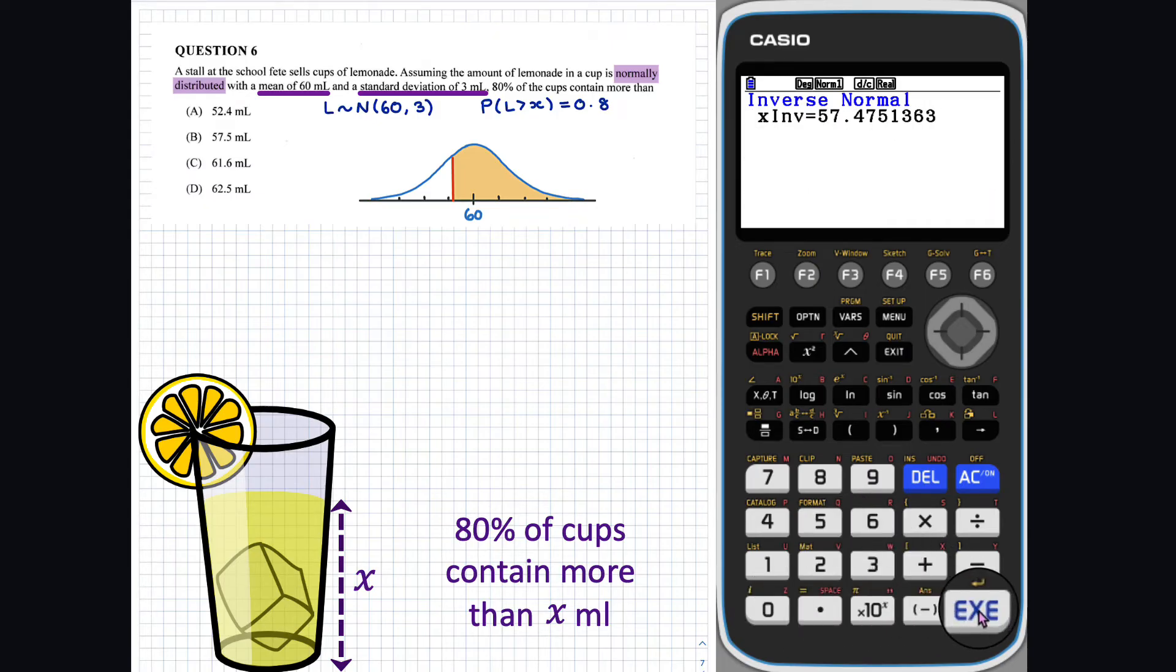So, the amount of lemonade required is 57.5 millilitres.